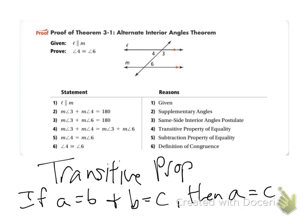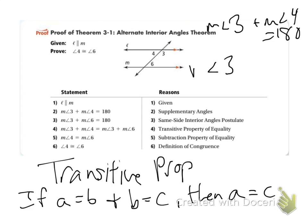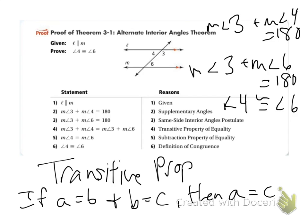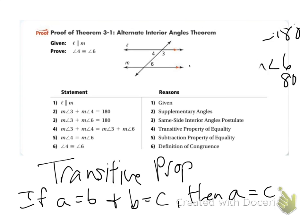In proofs, if you don't know what to do, just start writing out what you know. You could start writing that the measure of angle 3 plus angle 4 equals 180, and that angle 3 plus angle 6 is also equal to 180. Note that angle 4 is congruent to angle 6, although in this case I can't use that yet because I can't use the Alternate Interior Angles Theorem. But if you're not sure what to do during a proof, just start writing out what you do know, and then see if you can piece it together.